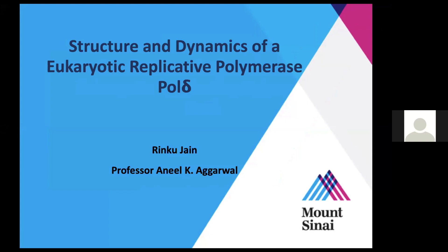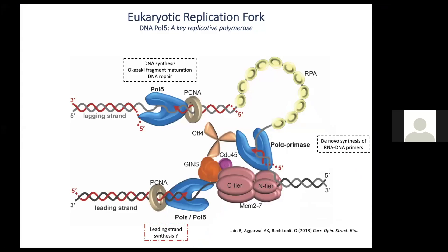Good morning everyone. My name is Vrinka Jain, and today I'm going to be talking about our work on the structure and dynamics of a eukaryotic replicative polymerase, which is Pol Delta. This work was done at Mount Sinai with Professor Aneel Aggarwal.